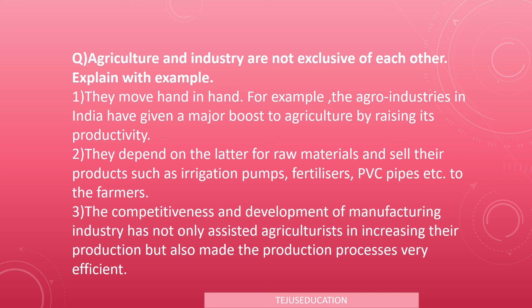India's economy depends mainly on agriculture. Agro-industries increase agricultural production. They depend on agriculture for raw materials — for example, sugarcane is the raw material from which sugar is produced.